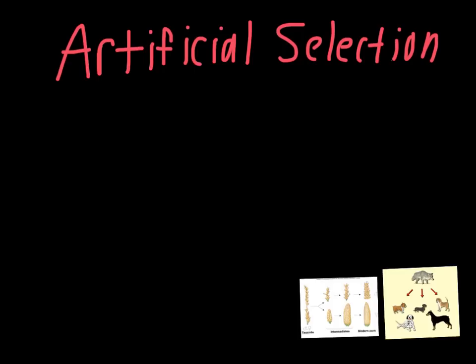The purpose of this video is to discuss the differences between artificial selection and natural selection. The first thing we need to talk about is that Charles Darwin was aware of the idea of natural selection.